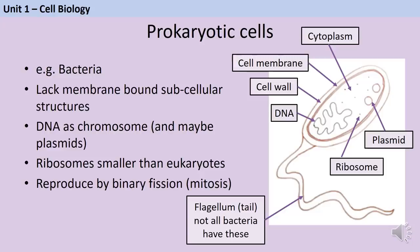Prokaryotes such as bacteria don't have a nucleus — they lack any membrane-bound subcellular structures, so they don't have mitochondria or chloroplasts either. Their DNA exists as a single circular chromosome, although some bacteria may also have small circles of DNA called plasmids. These contain genes for things like antibiotic resistance and can be passed between bacteria in a process called conjugation. Another difference between prokaryotes and eukaryotes is the size of their ribosomes — those in eukaryotes are significantly bigger.